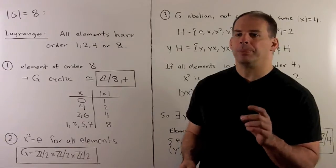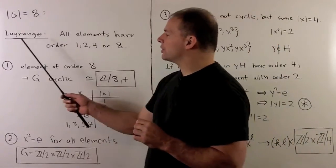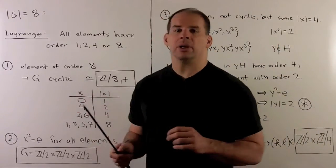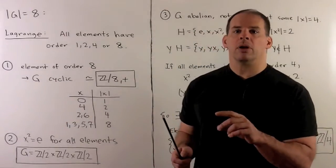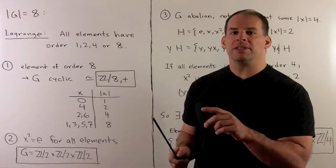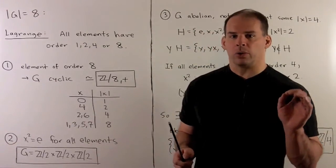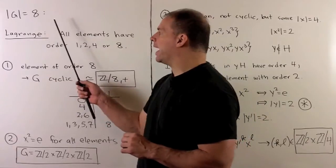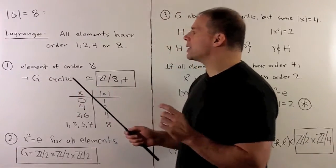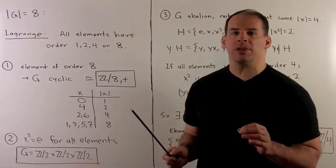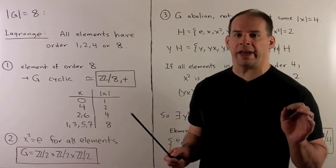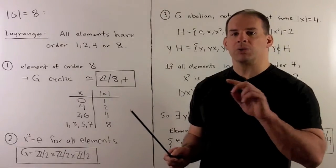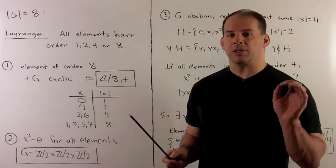By Lagrange's theorem, if I have a finite group, the orders of elements divide the order of the group. So if our group has order 8, the only possible orders for elements are 1, 2, 4, and 8. So let's whittle down the possibilities.